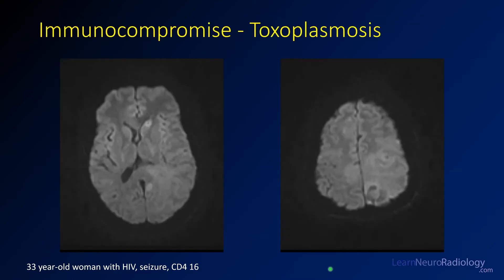On diffusion in that same patient, you can see the areas where those lesions are are not nearly as bright as what you might see from an abscess. That's more typical of toxoplasmosis.